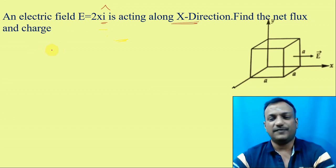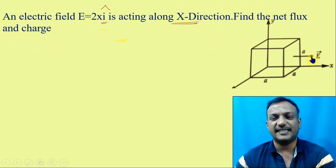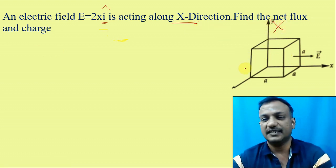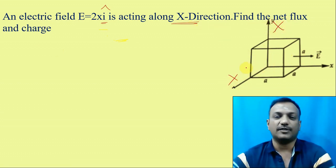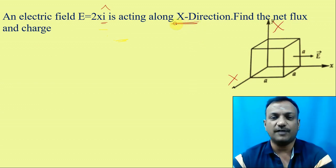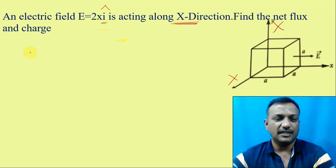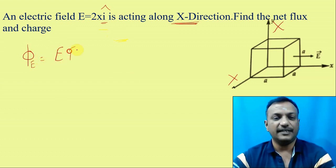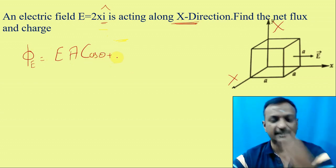How much is the flux in the electric field? The flux is going to act only along the x-direction. What is the formula for flux? Phi is equal to E into A into cos theta.